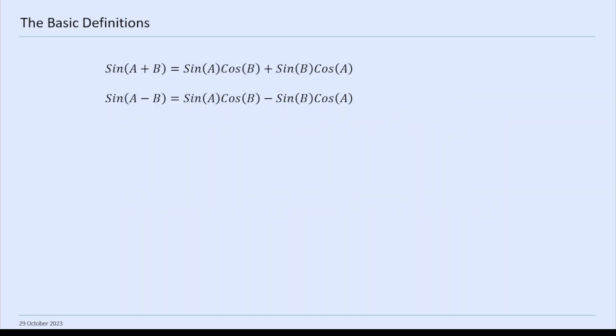So let's just look at the formulae to begin with. Sine A plus B equals sine A cos B plus sine B cos A. Sine A minus B equals sine A cos B minus sine B cos A. Cos A plus B equals cos A cos B minus sine A sine B. Cos A minus B equals cos A cos B plus sine A sine B.